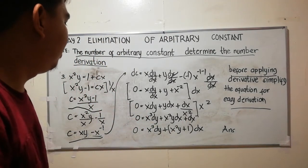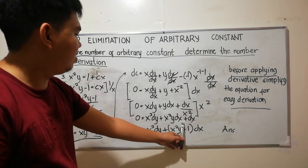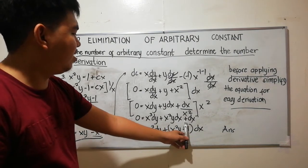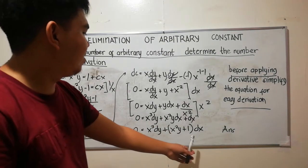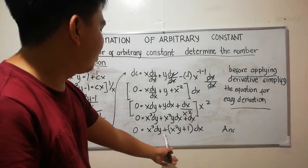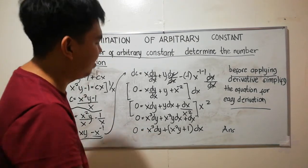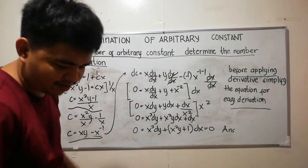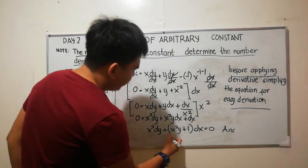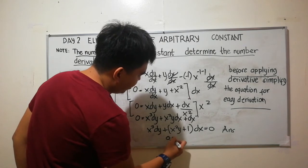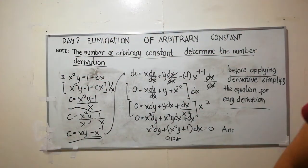As you can see, the dx terms are already grouped. Taking dx as a common factor: x cubed dy plus (x squared y plus 1) dx equals 0. This is the final answer — an ordinary differential equation (ODE). That's the end of problem number three. Thank you.